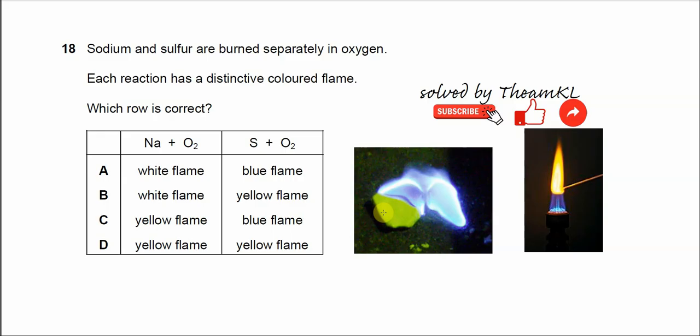But once it gets burned, the yellow solid will produce the blue flame like this. So when sodium gets burned it will form yellow flame, sulfur gets burned it will form blue flame. That's the characteristic.